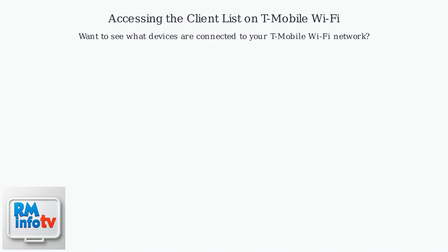Want to see what devices are connected to your T-Mobile Wi-Fi network? It's simple. There are primarily two ways to do this: using the T-Mobile Internet app or through your T-Mobile account online.